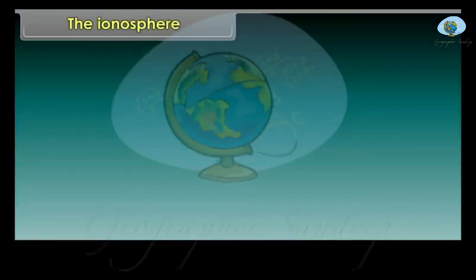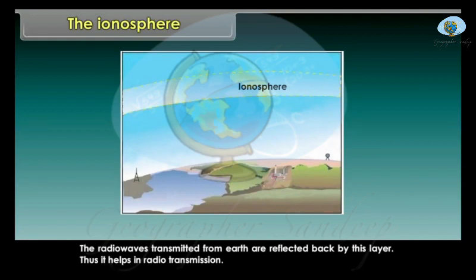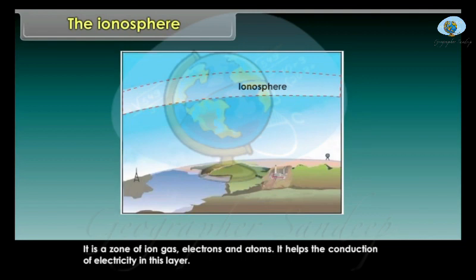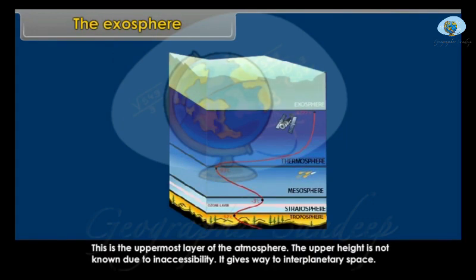The ionosphere extends above the mesosphere up to a height of about 400 km. Radio waves transmitted from Earth are reflected back by this layer, thus helping in radio transmission. It is a zone of ion gas, electrons and atoms, and it helps the conduction of electricity. It contains electrically charged particles called ions. The exosphere is the uppermost layer of the atmosphere. Its upper height is not known due to inaccessibility, and it gives way to interplanetary space.